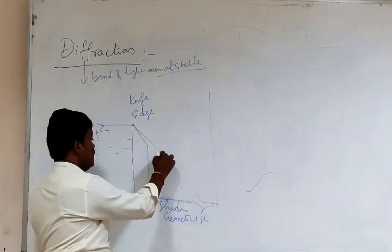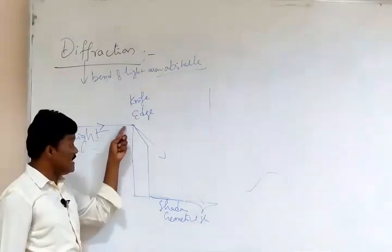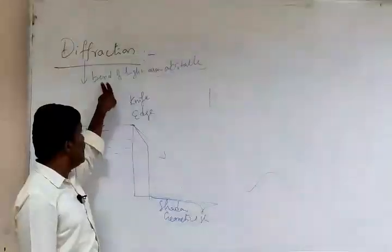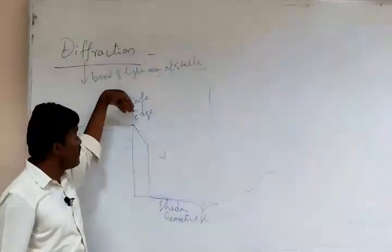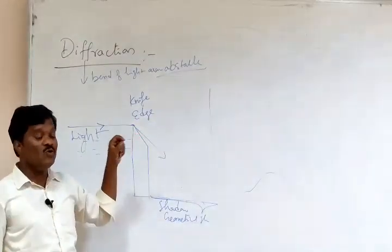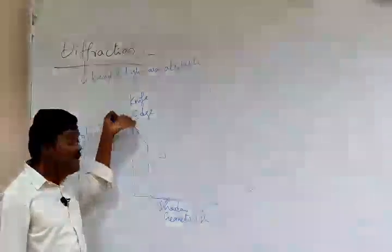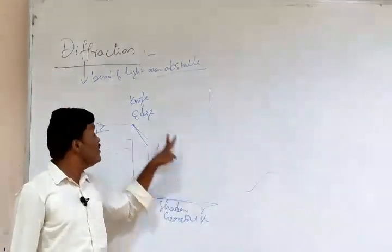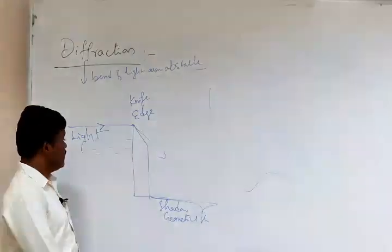The penetration of light into the geometrical shadow of an obstacle is also called diffraction. Earlier we defined diffraction as bending of light around an obstacle, and now we are also defining it as penetration of light into the geometrical shadow of the obstacle. This is what you should write in an examination.